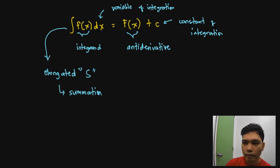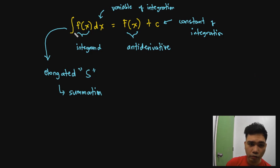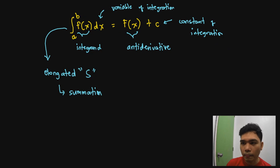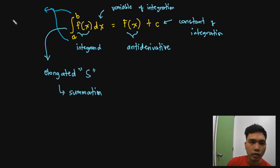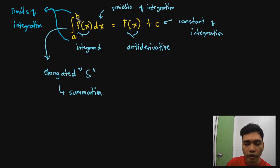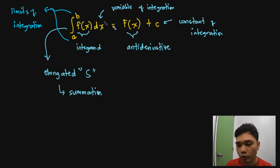If you want to add another part to the integral expression, we can have here a and b, which we refer to as the limits of integration. The lower limit is written at the lower portion of our integration symbol, and the upper limit is written at the upper portion of our elongated S.